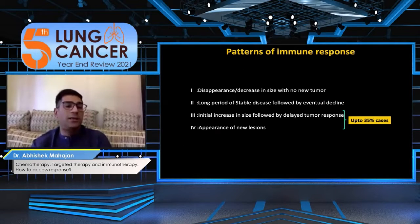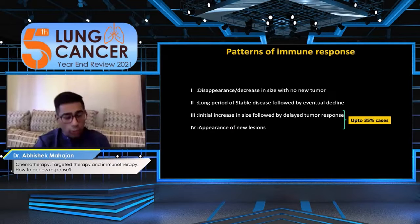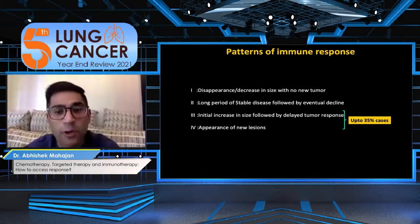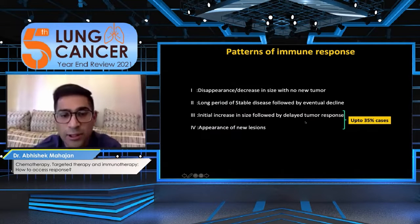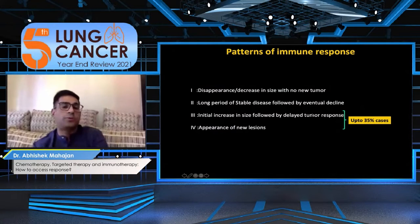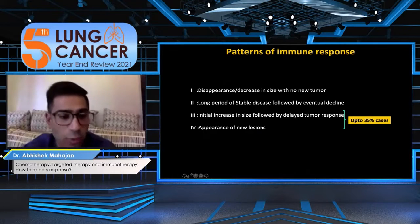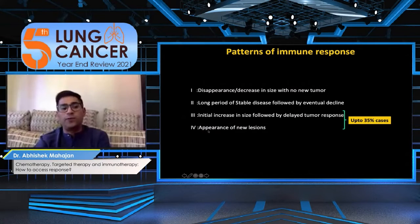As per the iRECIST, you have four categories of immune response. Category 1 is the complete disappearance of tumor. Category 2 is a long stable period of stable disease followed by eventual decline in tumoral size. Category 3 is initial increase followed by a decrease — this is the pseudoprogression category. Category 4 is appearance of a new lesion and regression of the newly appeared lesion, where the patient has no disease, then develops a new lesion which again regresses in size. Category 4 is very rarely seen.